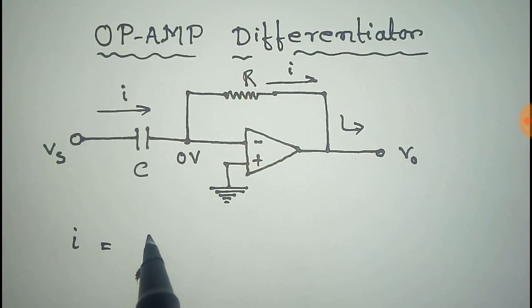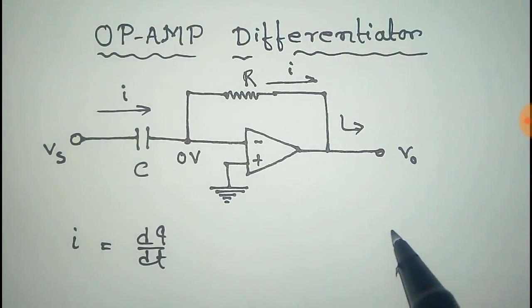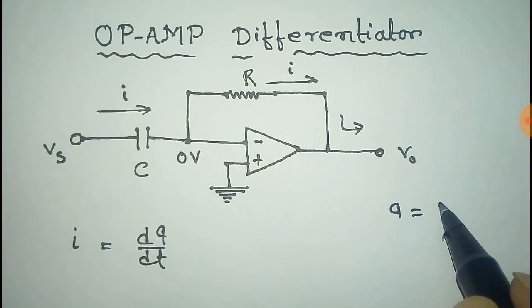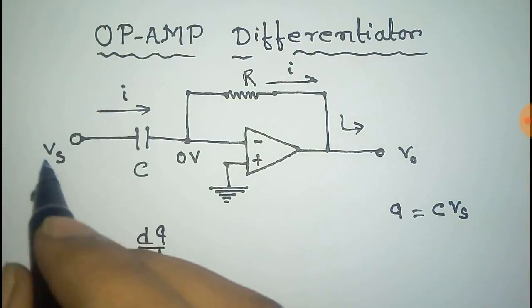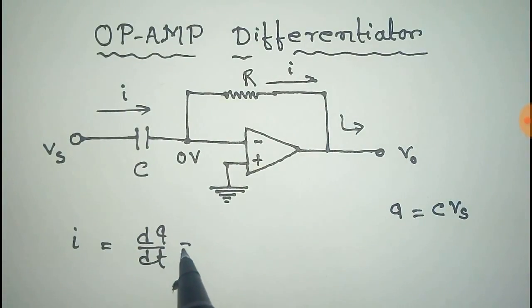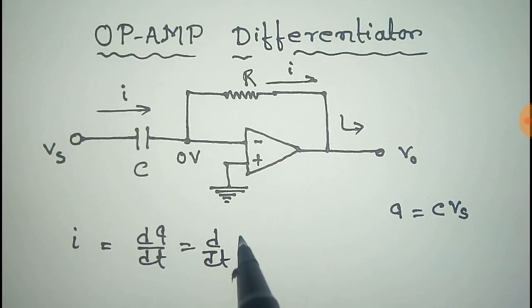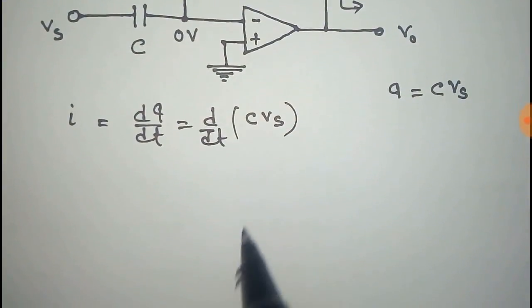Now from this we get that current i is equal to dq/dt, the derivative of charge with time for this capacitor. Charge is equal to CVs, so you can replace this to get CVs. C is constant, so i = C d(Vs)/dt.